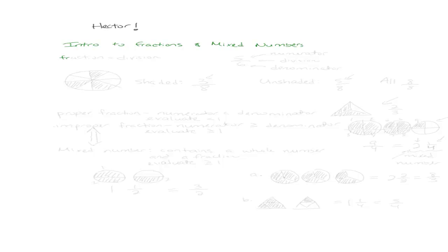So let's start by thinking about a fraction. What is a fraction? You might think that a fraction is division, and you would be correct. So take a fraction like 5 over 6. We know that the fraction bar really means division. We also have a numerator — that's what we call the top number — and we call the bottom number the denominator. The numerator is the top number, the denominator is the bottom number.